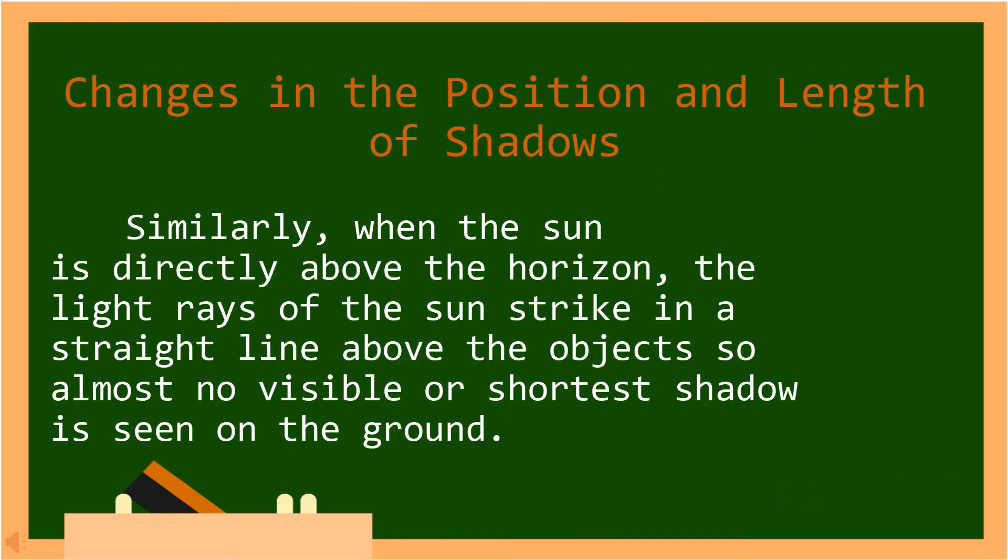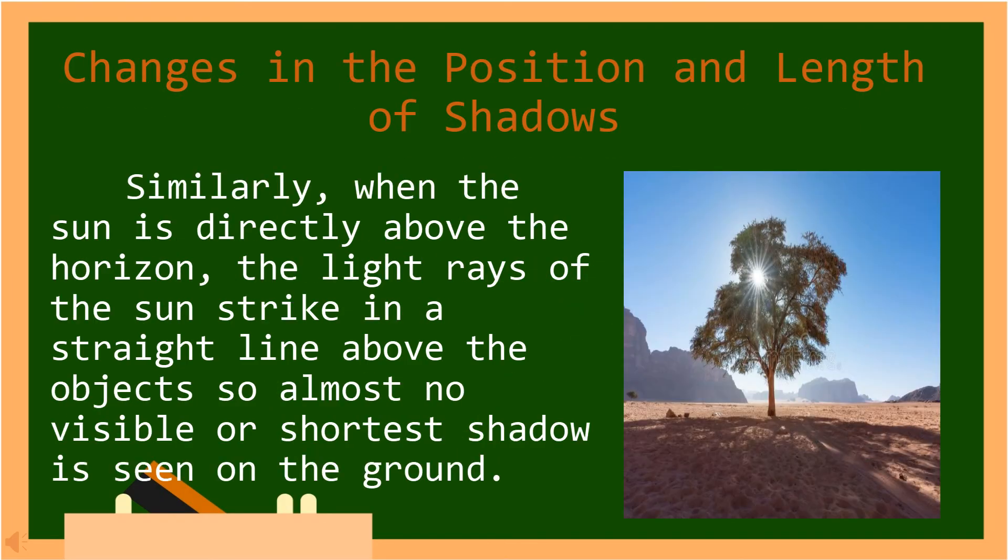Similarly, when the sun is directly above the horizon, the light rays of the sun strike in a straight line above the objects. So almost no visible or shortest shadow is seen on the ground. In Tagalog, katulad nito, kapag ang araw ay direkta sa itaas ng abot-tanaw, ang mga sinag ng araw ay tumatama sa isang tuwid na linyan sa itaas ng mga bagay, kaya't halos walang nakikita o pinakamaikling anino ang nakikita sa lupa.